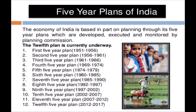Then we had plans from 1980 to 1985, 1985 to 1990, then a gap, followed by plans from 1992 to 1997, 1997 to 2002, and continuing till 2017. The last plan, the Twelfth Five Year Plan, was terminated in 2015 when Niti Aayog was launched by Prime Minister Narendra Modi.